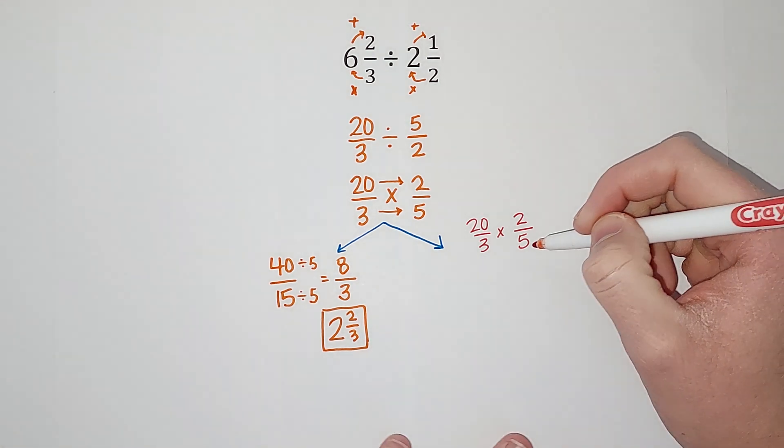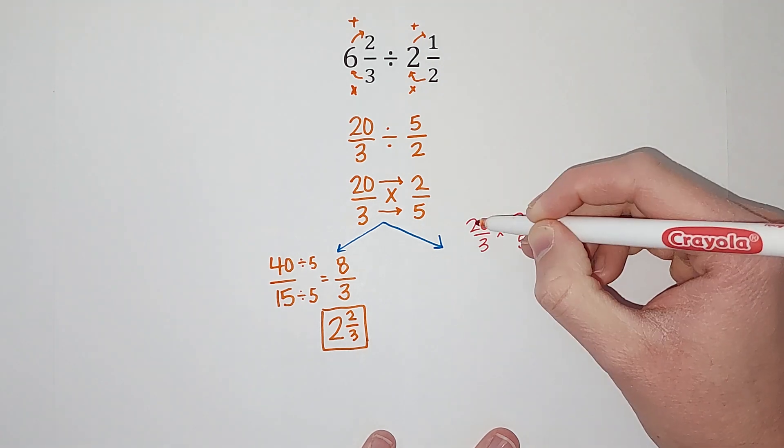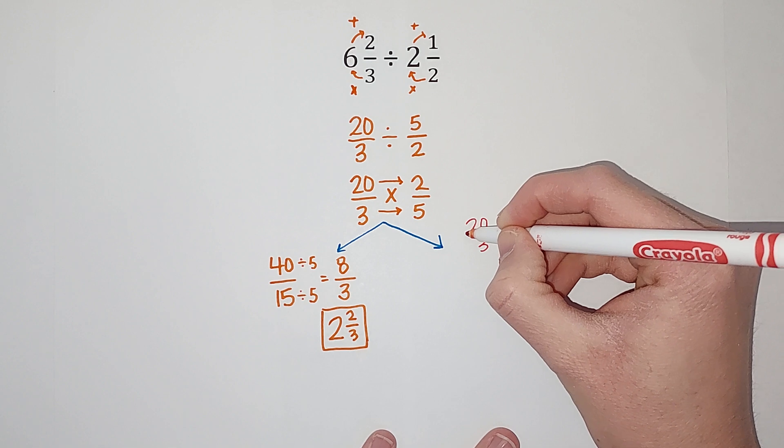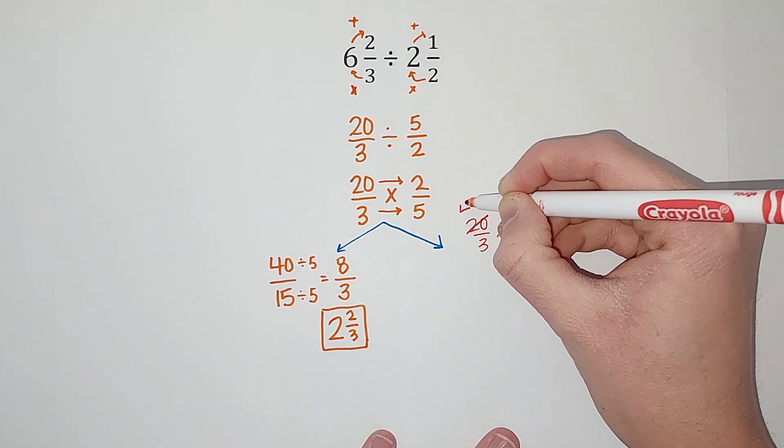So I notice that 5 goes into 5 and 20. So 5 goes into 5 once and 5 goes into 20 four times. So I'm just simplifying before instead of after, but I'm doing the same thing.